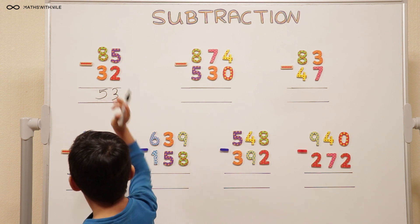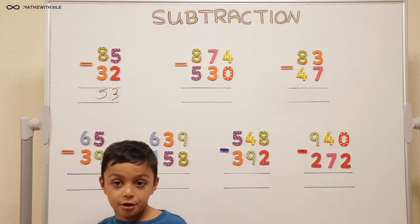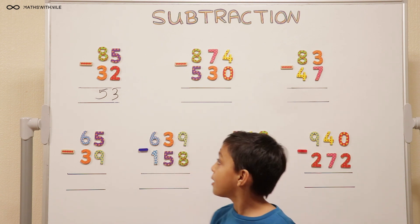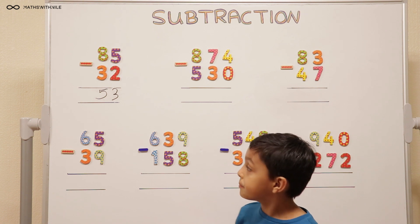And 8 take away 3 equals 5. What column is that? 80 take away 30, that's the tens column. Very good Niall. So what's the answer? 53. Very good.